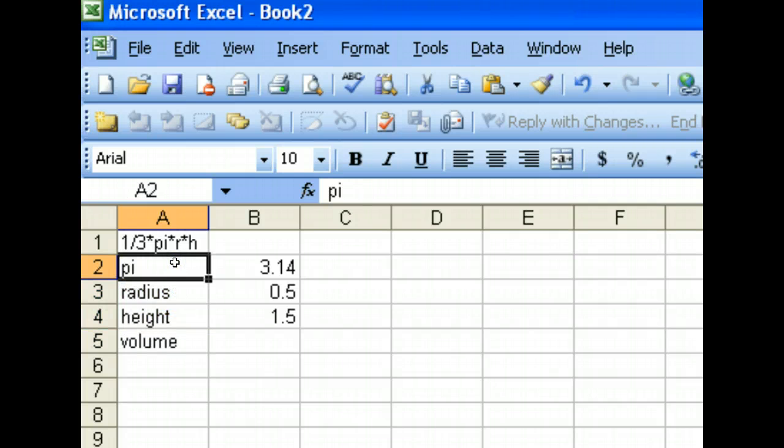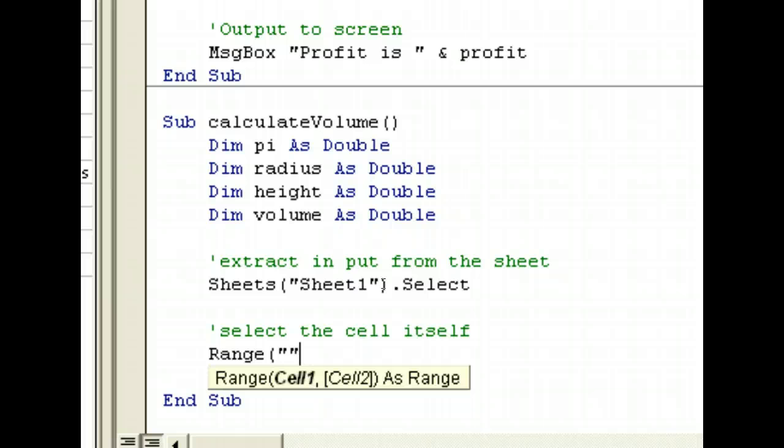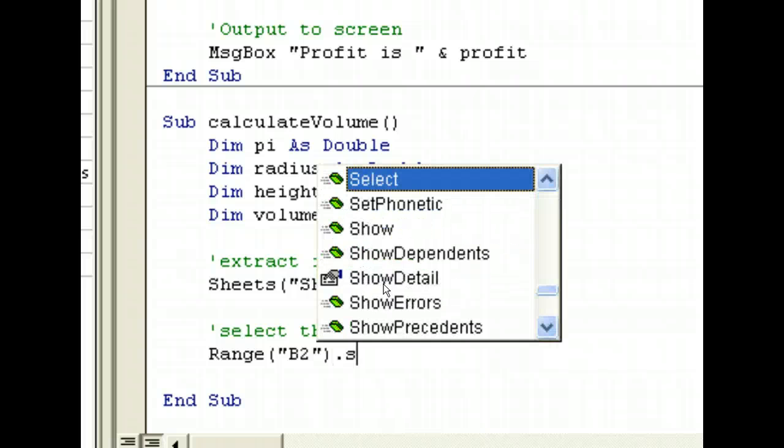We can do this by selecting a range. In this case, we want to select from B2. So, B2 what we can do is we can do this. So, now select the cell itself. Select the cell. Select B2. What we do is Range. And then we do this. B2. So, what this is is actually selecting a range which is B2. And then .Select. Very simple.